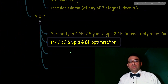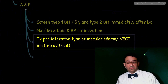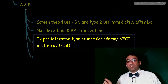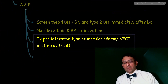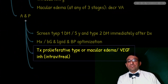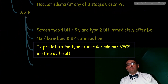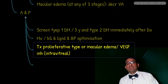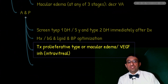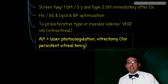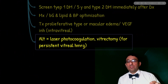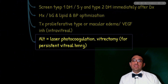Treatment for the proliferative and macular edema stages includes intravitreal VEGF inhibitors such as bevacizumab and ranibizumab — used for the proliferative type (neovascularization and vitreous hemorrhage, also called the malignant type) or when the patient complains of decreased visual acuity indicating macular edema. The alternative is laser photocoagulation. If vitreous hemorrhage persists despite VEGF inhibitors, we consider vitrectomy.